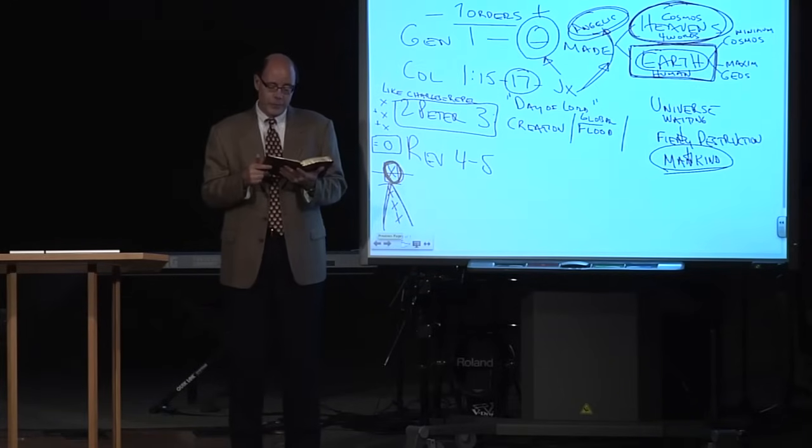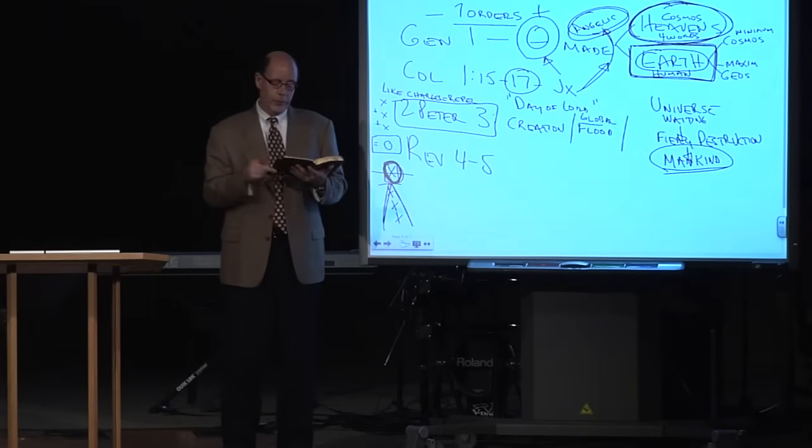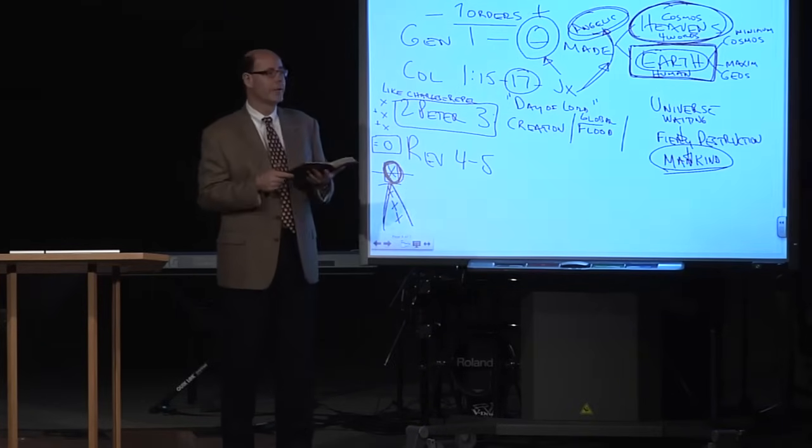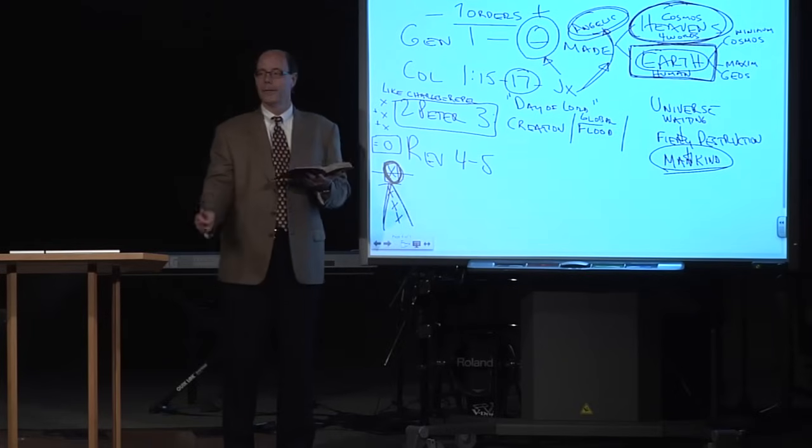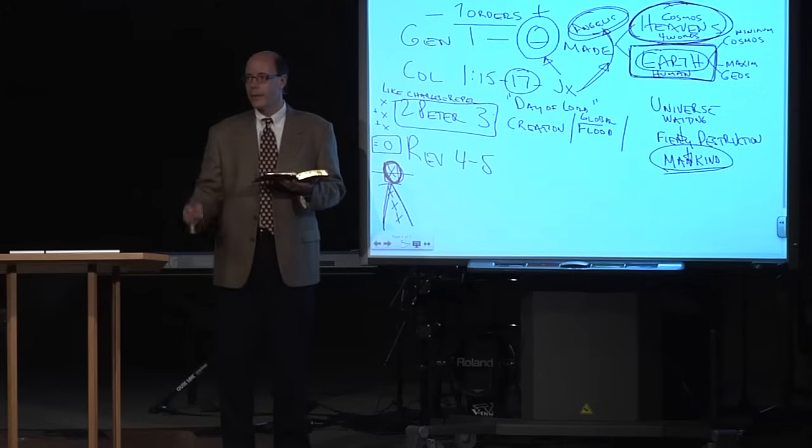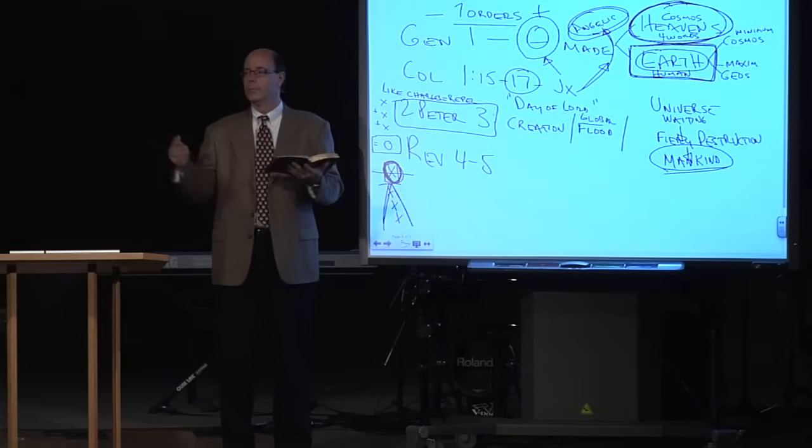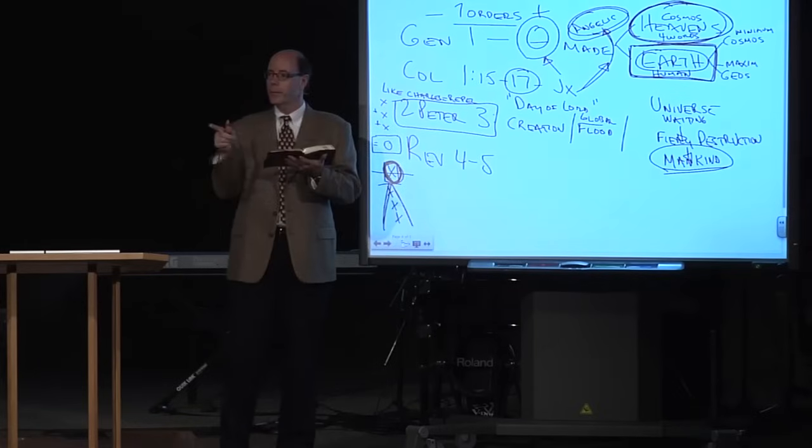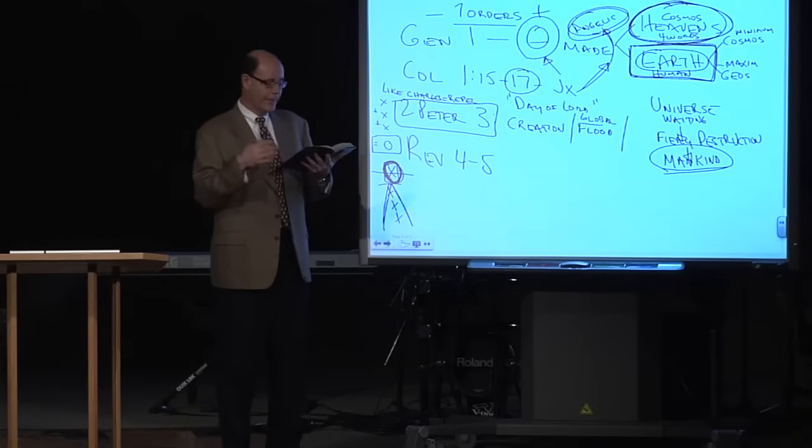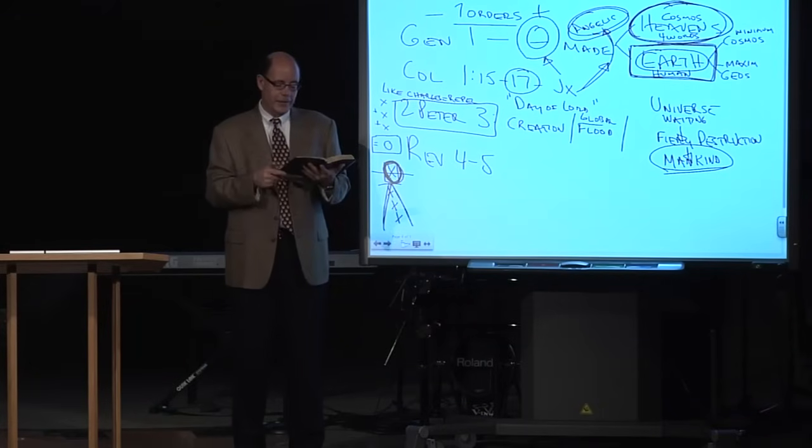Therefore, since all these things will be dissolved, verse 11, what manner of persons ought you to be? Looking forward, verse 12, and hastening the coming of the day of God. How do we do that? We lead people to the Lord. Did you know there's like a clicker? You know, counting off. And when the last one that God has chosen, boom. You know, lead people to the Lord. It'll hasten the coming of the day of God. Because of which the heavens will be dissolved. That's the second time it says that. That's the whole universe.